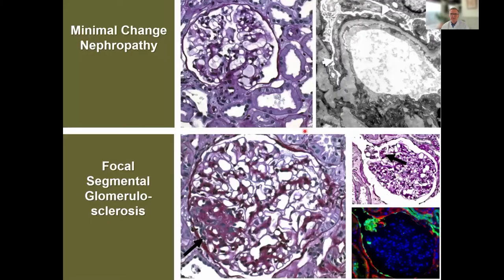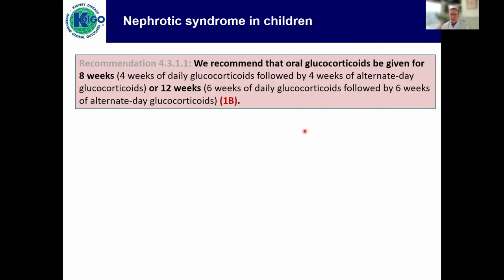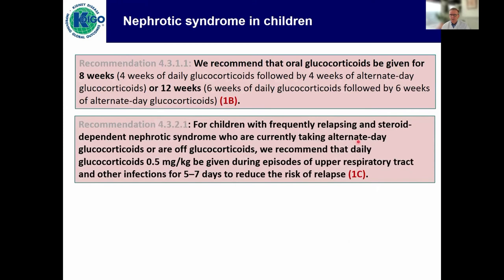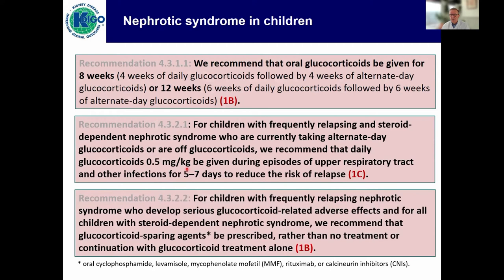Minimal change and FSGS. In children, the guideline recommends oral corticosteroids for eight or twelve weeks — a 1B recommendation. For children with frequently relapsing or steroid-dependent nephrotic syndrome, we recommend that steroids are given in episodes of upper respiratory tract or other infections so it doesn't trigger a relapse. For those who are frequent relapsers, have steroid-related side effects, or are steroid dependent, we recommend any glucocorticoid-sparing agent — this could be oral cyclophosphamide, levamisole, MMF, rituximab, or calcineurin inhibitors.